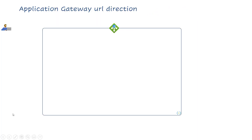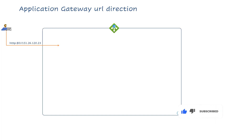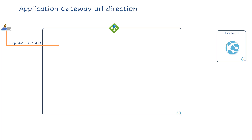Let's first understand the scenario. We have an application user here which is basically trying to connect to the application backend using the HTTP URL. We have a URL which is a public IP address, and we are trying to access this URL on port 8080 or port 80. Then we have a backend web application which is protected with HTTPS. We would like to allow users to route traffic on HTTP using this public IP address to the Application Gateway.